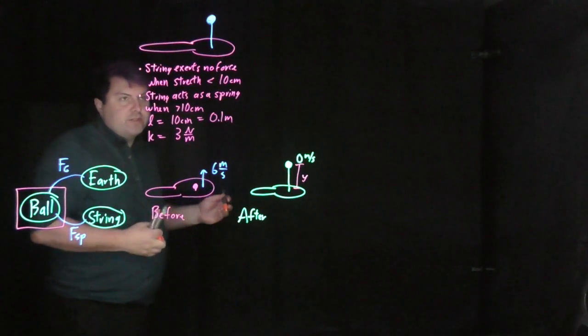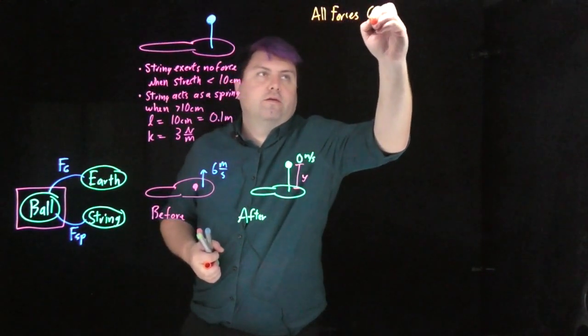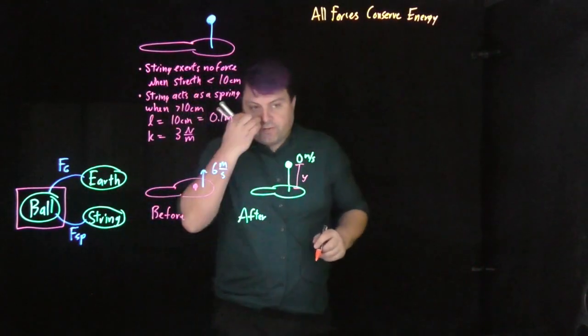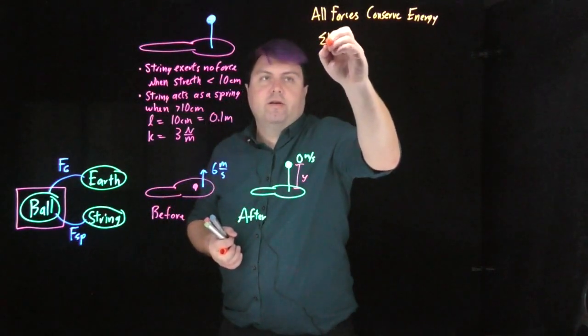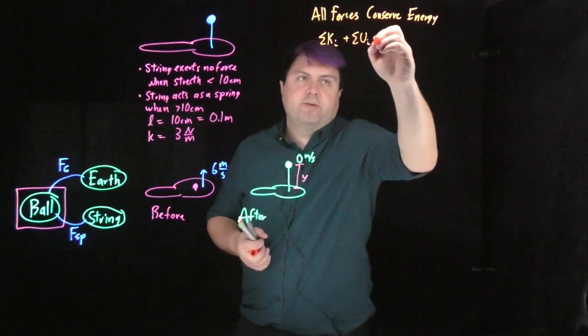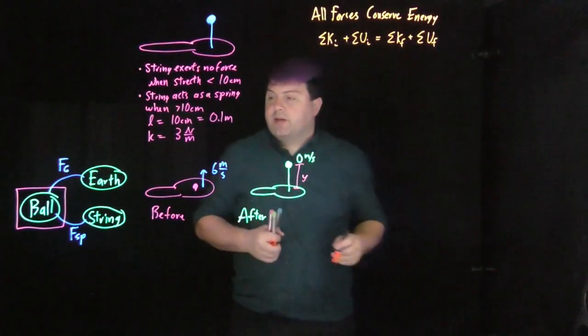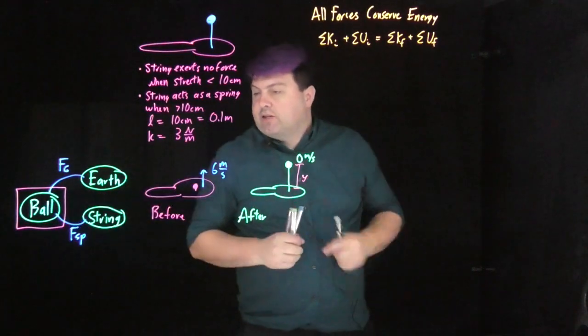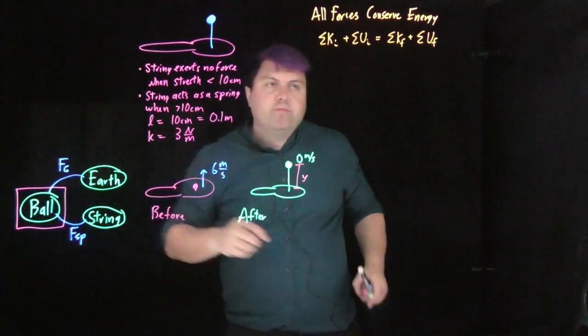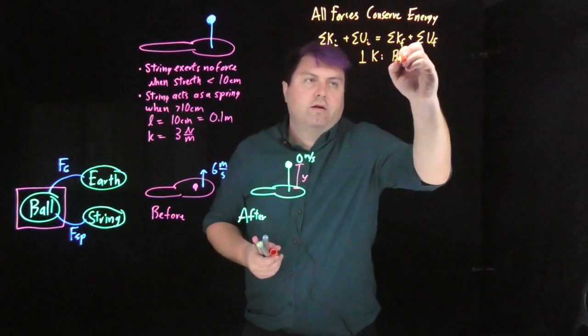All of our forces conserve energy, which means we can use the conservation of mechanical energy. We have the sum of the initial kinetic energies plus the sum of the potential kinetic energies equals the sum of the final kinetic energies plus the sum of the final potential energies. How many objects in our system? We just have the ball.